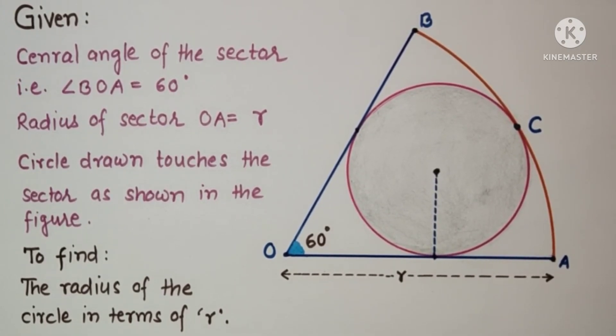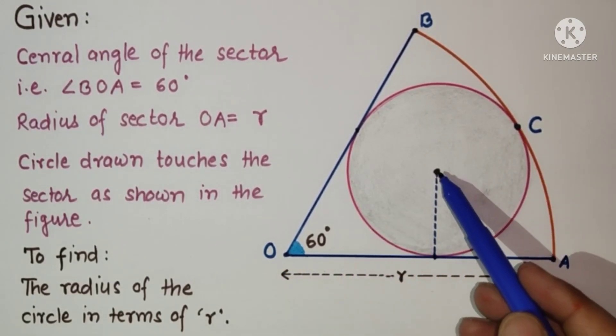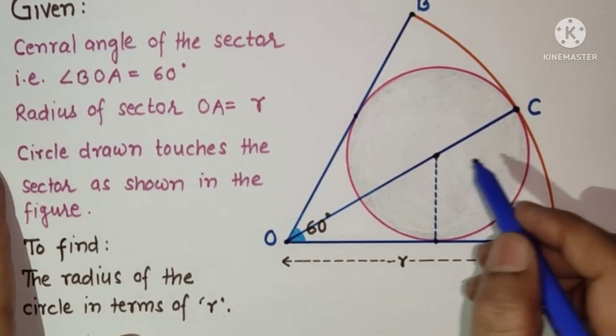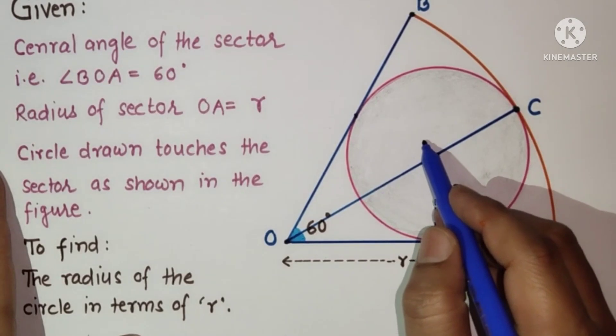If two circles touch externally or internally, then their centers and point of contact lie in a straight line. So if we join OC, it will pass through the center of the circle. Let us suppose this point P is the center of the circle.